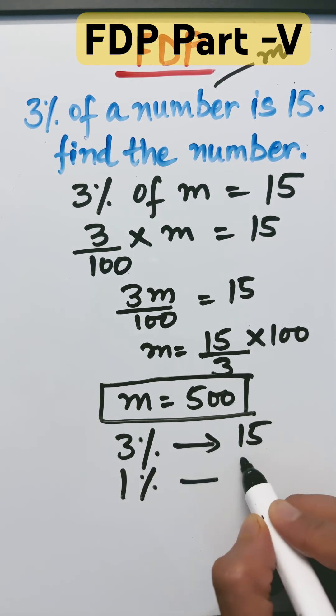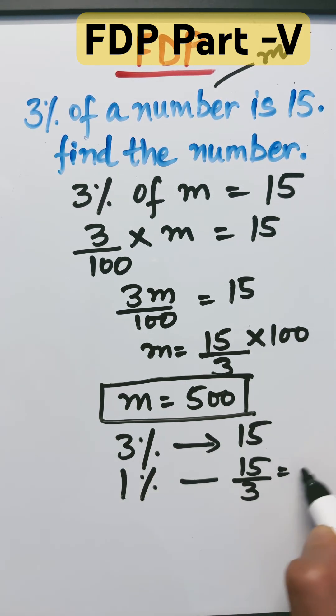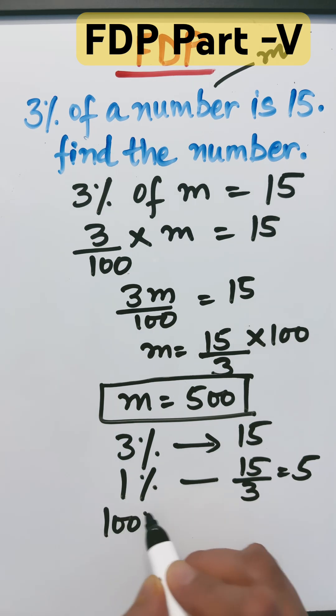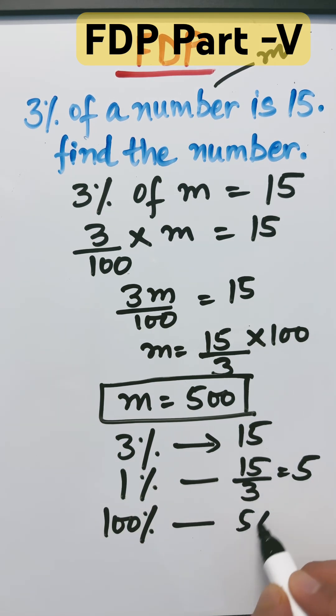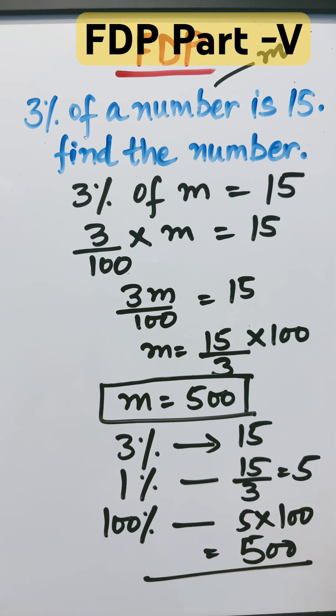So 1% is 15 divided by 3, which gives me 5, and 100% quantity is 5 times 100, which gives me 500. And that's the answer. That's all.